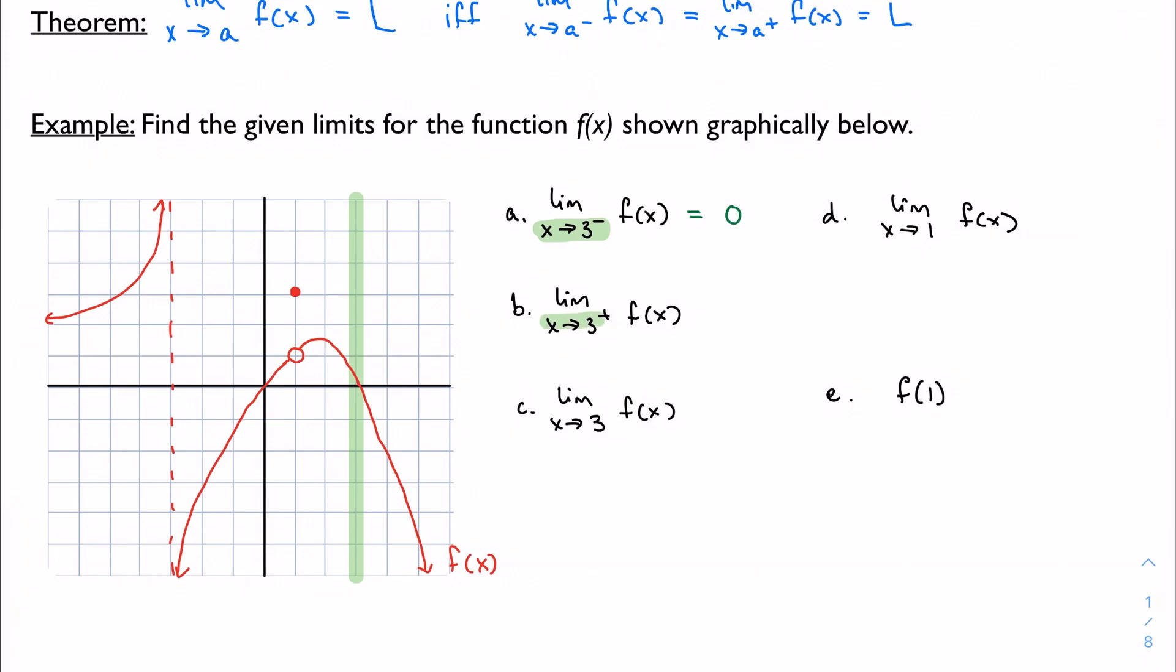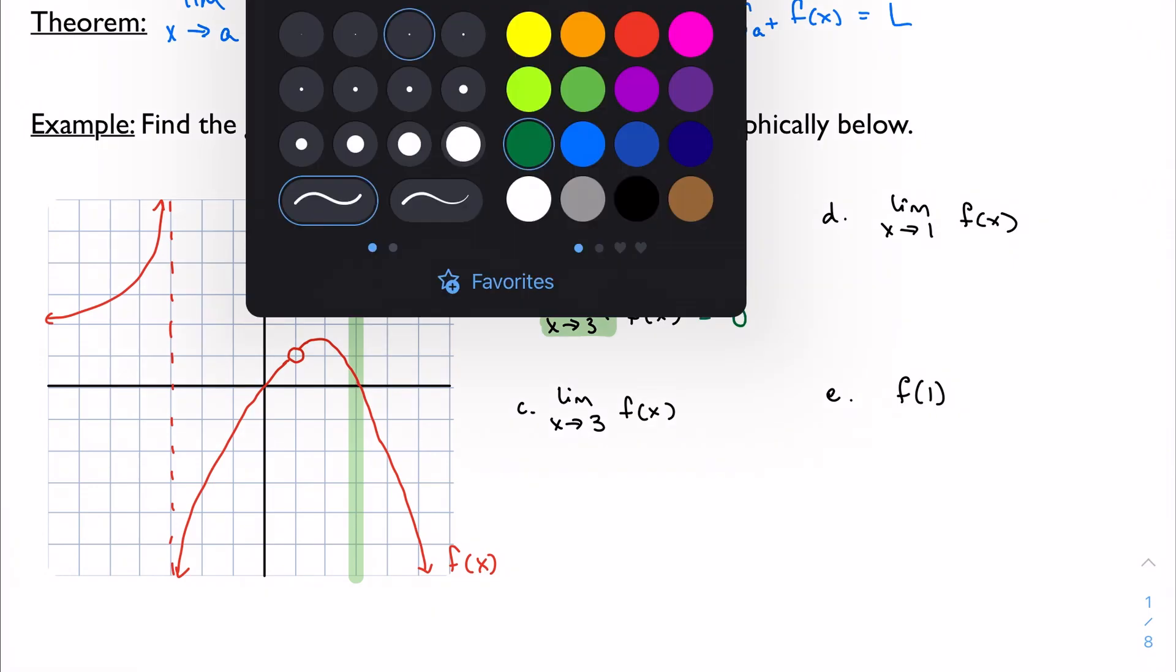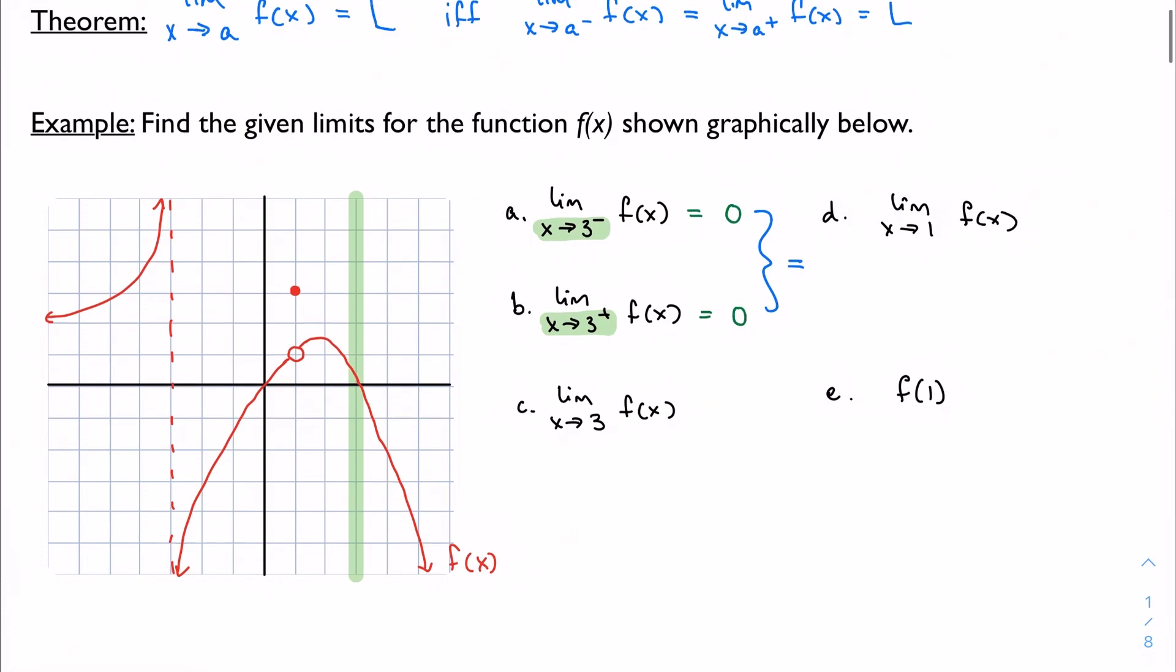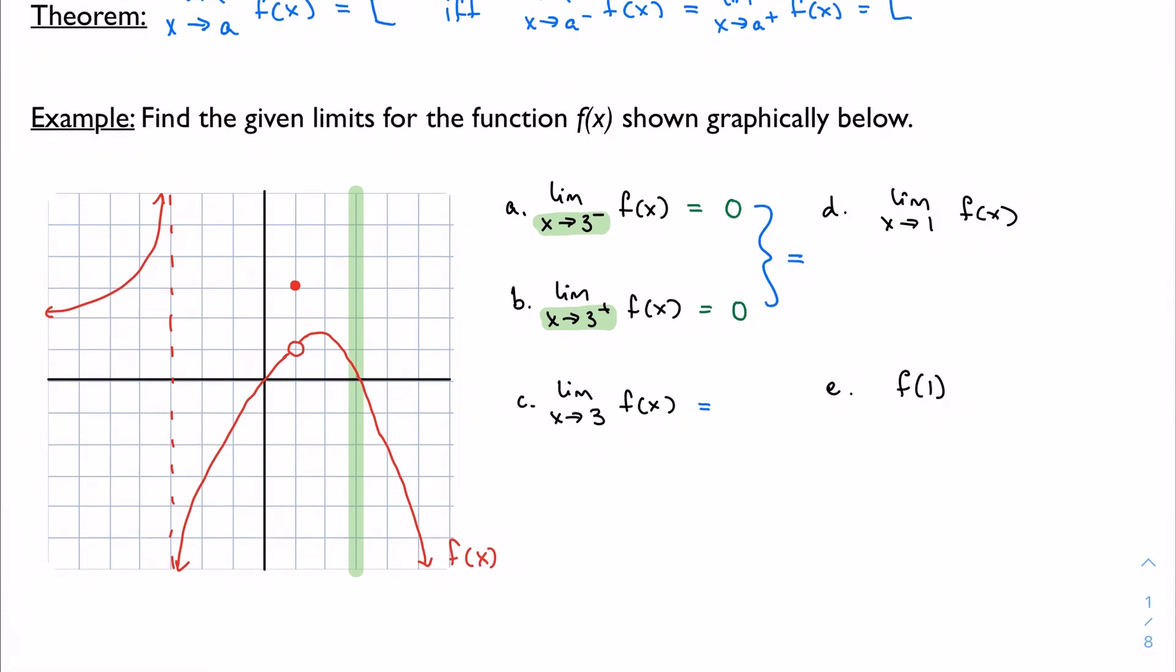Now we want to look at it from the right. If I start on the right-hand side of my function and move toward 3, it looks like I'm approaching 0 again. So this would also be 0. And because my two one-sided limits are equal to each other, the limit overall as x approaches 3 is 0. We always want to check both sides.